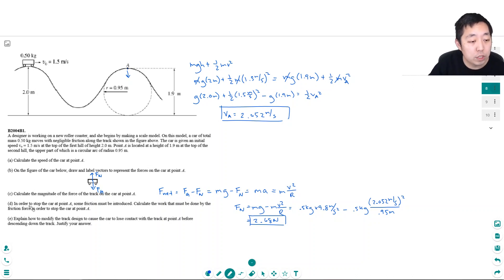In order to stop the car at point A, some friction must be introduced. Calculate the work that must be done by the friction force in order to stop the car at point A. So I think what they're saying is during this path, if there was some friction, then it wouldn't have any velocity here.